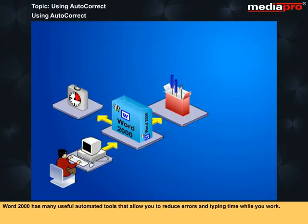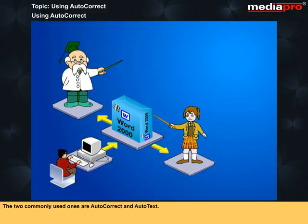Word 2000 has many useful automated tools that allow you to reduce errors and typing time while you work. The two commonly used ones are AutoCorrect and AutoText.